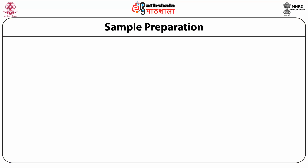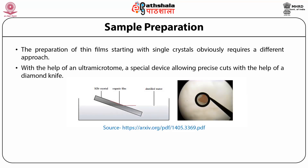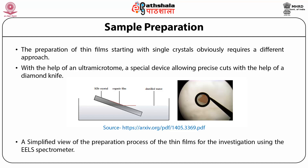Continuing with the analysis carried out with the help of high-resolution electron energy loss spectrometry, the preparation of thin films starting with single crystals obviously requires a different approach. With the help of an ultra-microtome — a special device allowing precise cuts with the help of a diamond knife — the simplified view of the preparation process of the thin film has been illustrated here in the diagram.